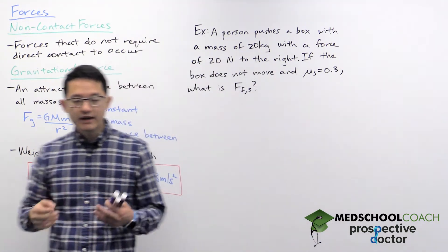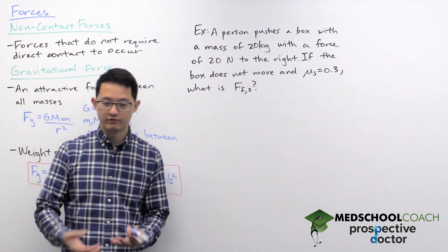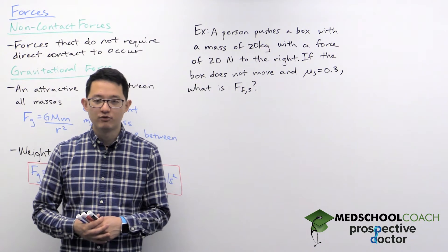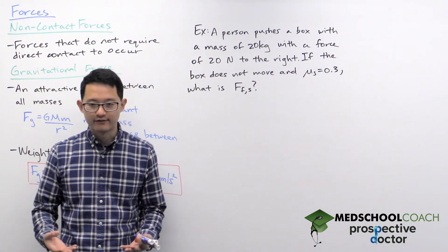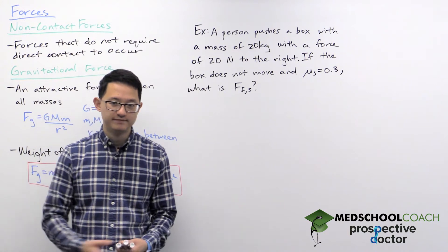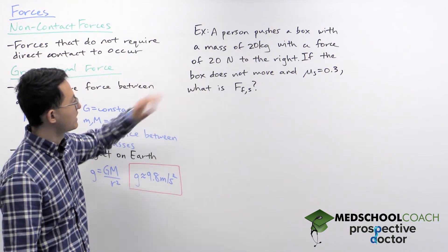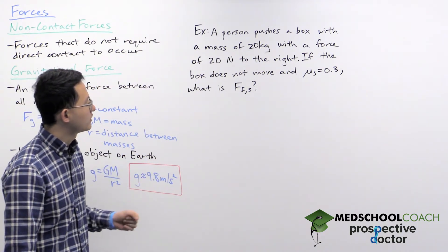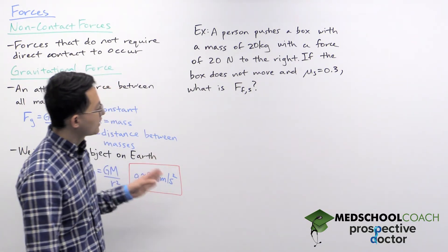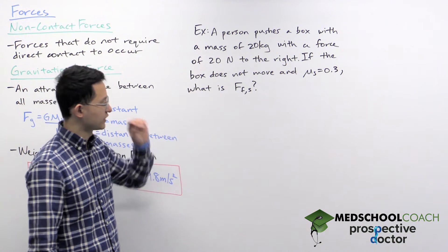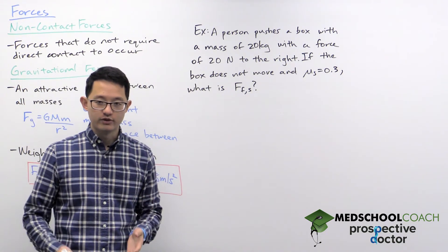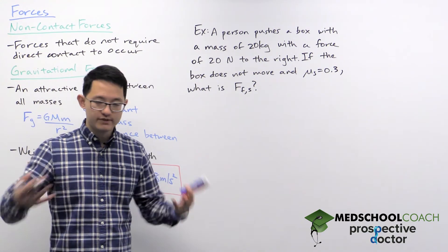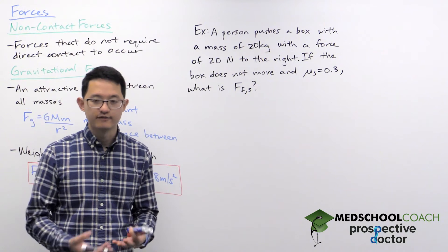Now that we better understand non-contact forces with our example of gravitational force, let's take a look at an example where we apply concepts of both contact forces and non-contact forces. A person pushes a box with a mass of 20 kilograms to the right with a force of 20 Newtons. If the box does not move and the coefficient of static friction is 0.3, what is the force of static friction?